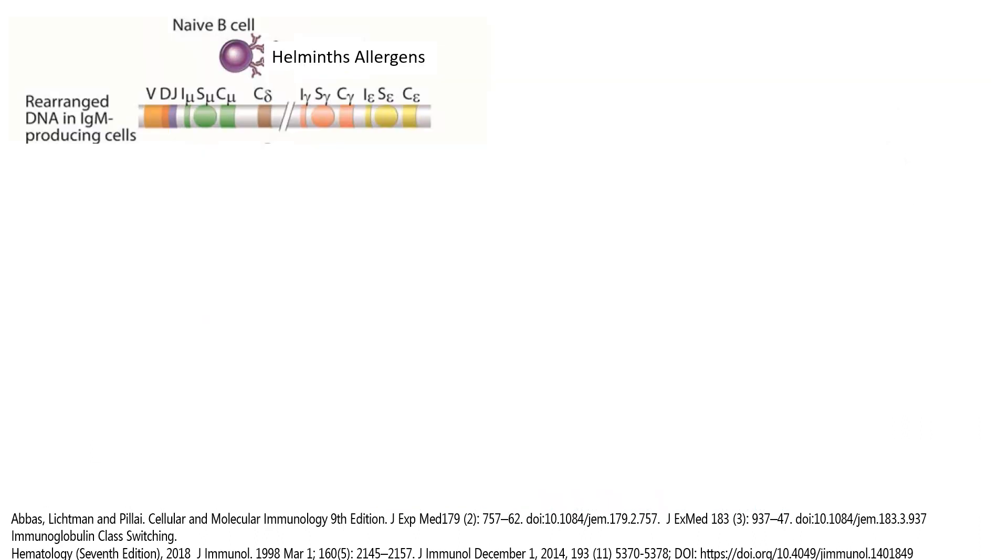When the naive B cell is presented with an allergen or a helminth, the variable region, specifically the genes that are called VDJ genes, will rearrange to bind that particular helminth. But another thing happens downstream.